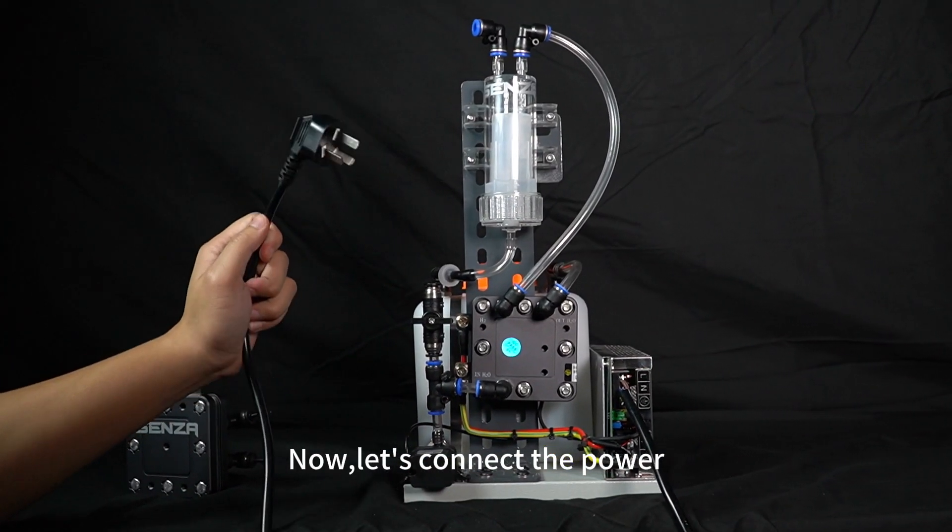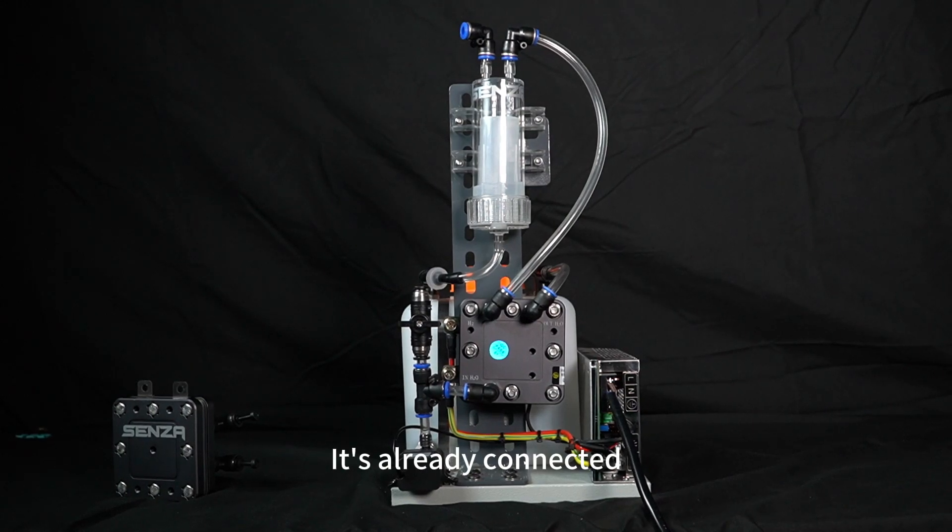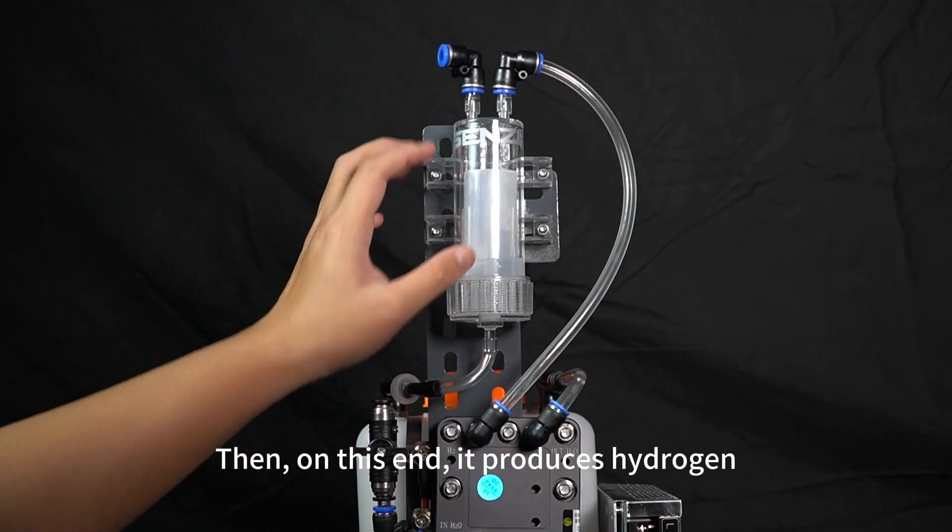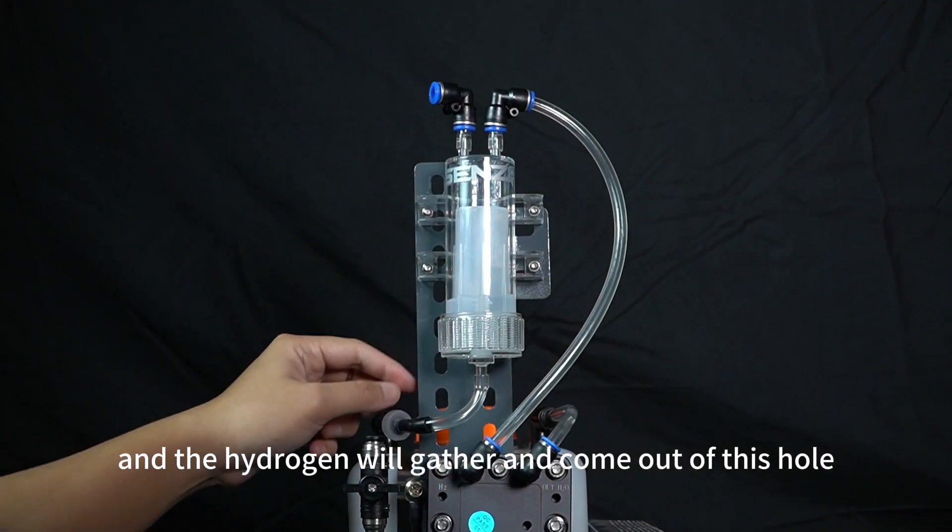Now, let's connect the power and get it running. Now, it's already connected. Just wait a moment, it's running again. Then on this end, it produces hydrogen, and the hydrogen will gather and come out of this hole.